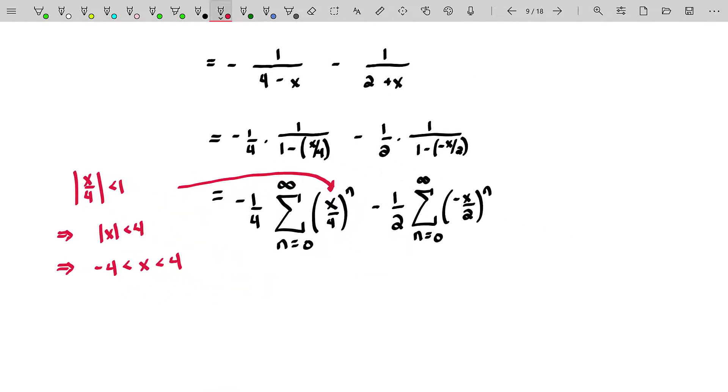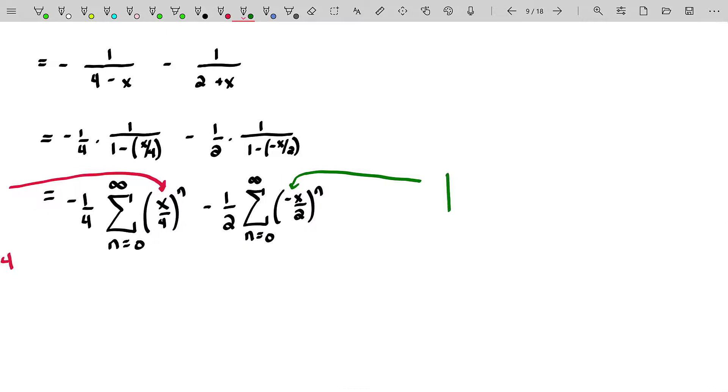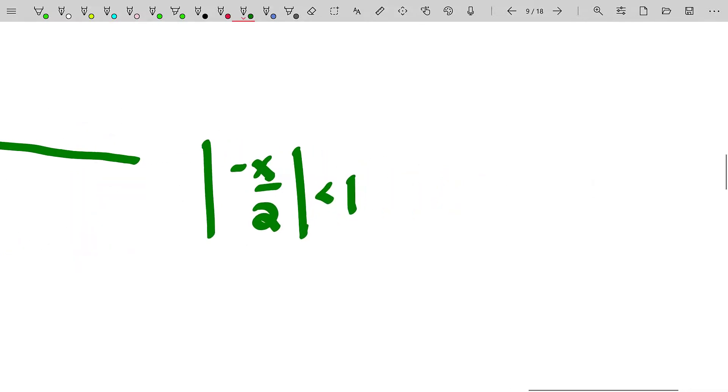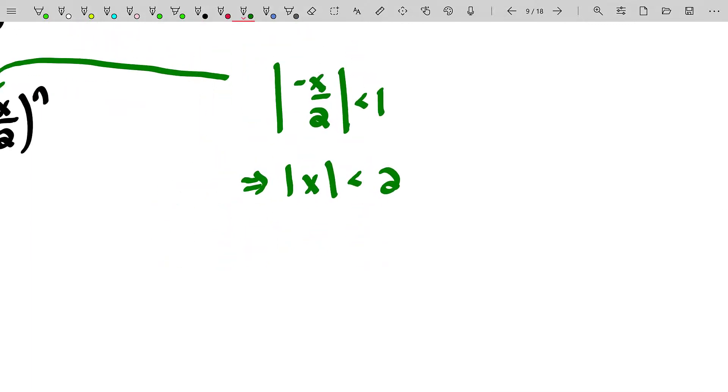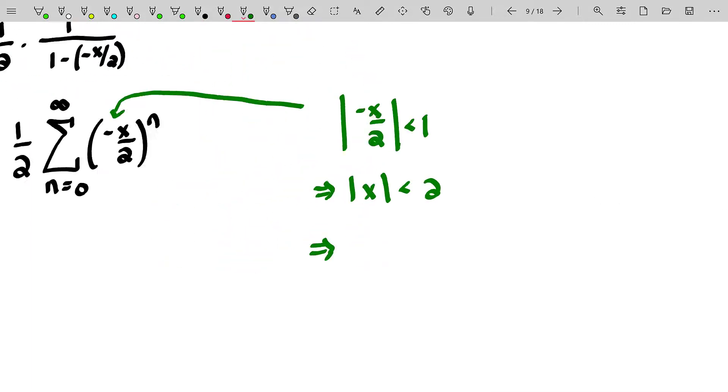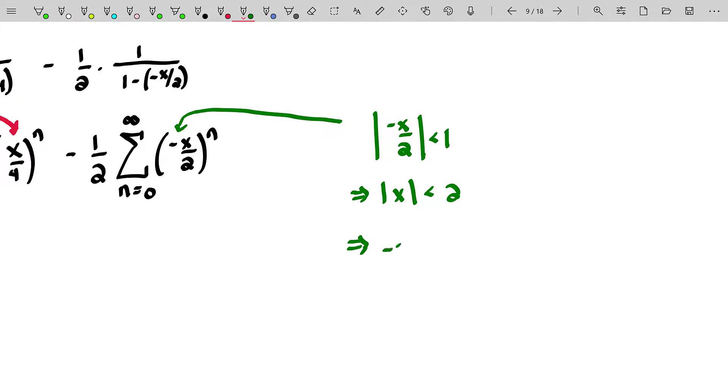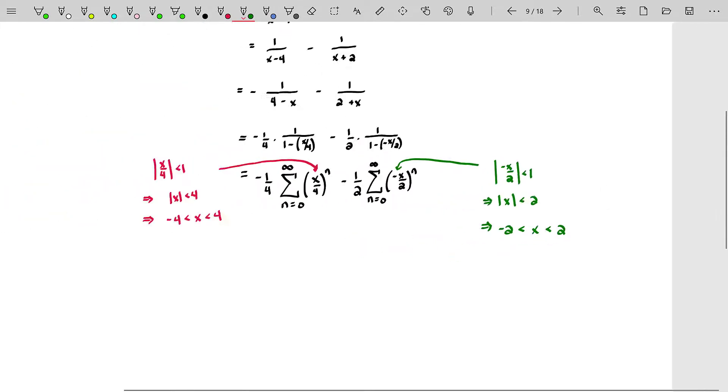However, if you take a look at the second power series, we require that the common ratio there, which is a negative X over 2, be less than 1 in magnitude as well. Well, we know the absolute value of a negative is a positive. Multiplying both sides by 2, you get to this. And this just means that we know that second power series will converge as long as X is between negative 2 and positive 2.